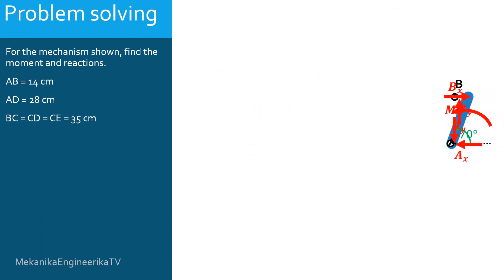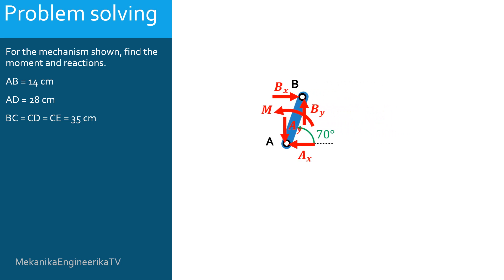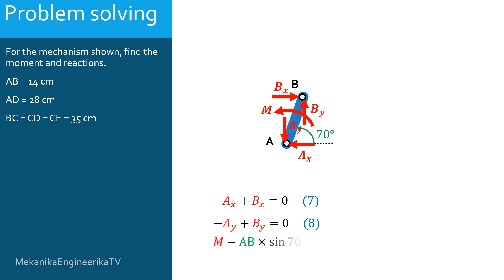For bar AB, equilibrium of forces along the horizontal direction gives: minus AX plus BX equals 0 — equation 7. Equilibrium of forces along the vertical direction gives: minus AY plus BY equals 0 — equation 8. Equilibrium of moments around point A gives: M minus AB·sin(70)·BX plus AB·cos(70)·BY equals 0 — equation 9.